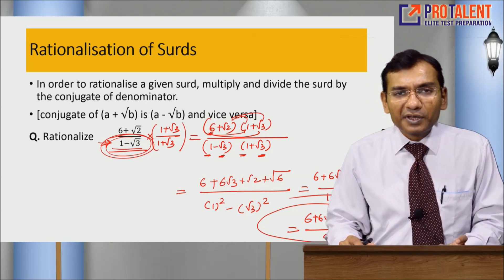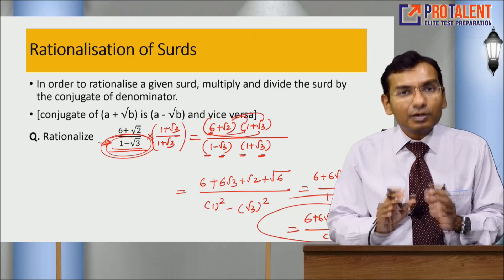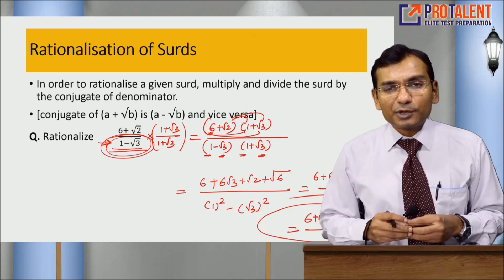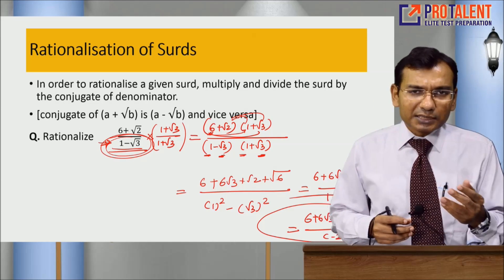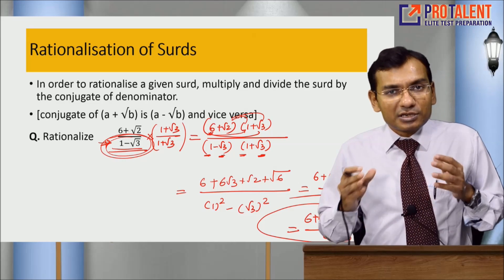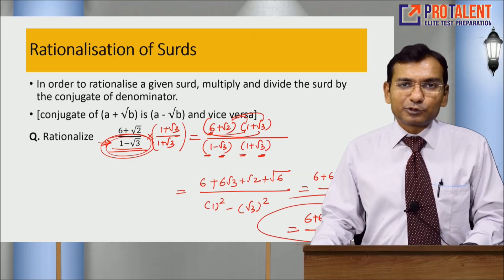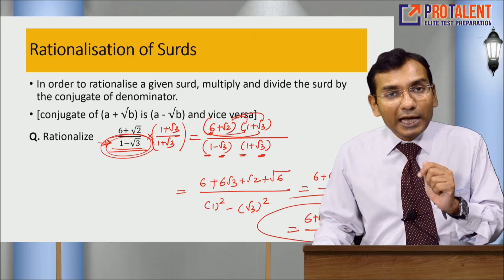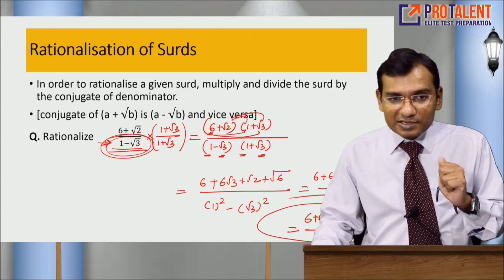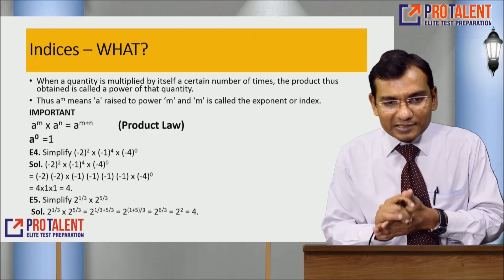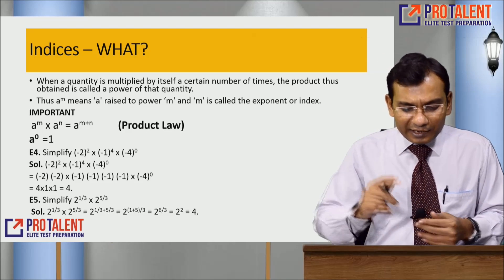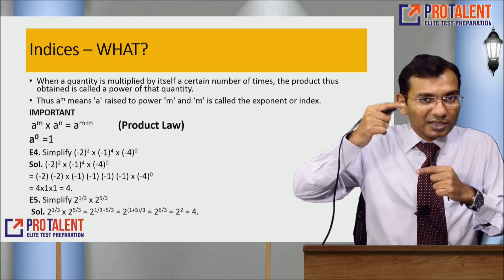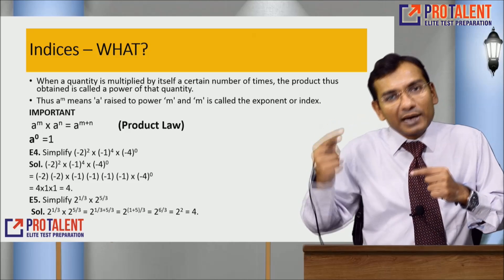I hope these basic concepts of surds are clear to you. We have provided some practice questions — mostly addition, subtraction, multiplication, and division. Please work on those. Now let's talk about indices. Indices are basically powers. A multiplied by A is written as A squared. A multiplied by A multiplied by A multiplied by A is written as A to the power 4. This is called indices or power.